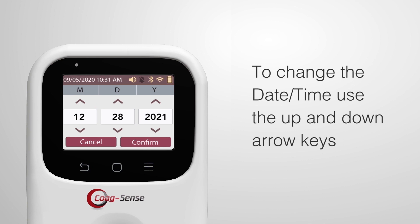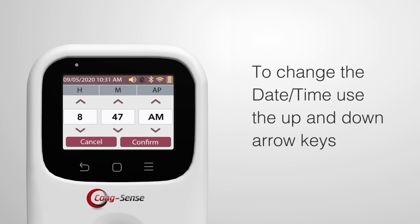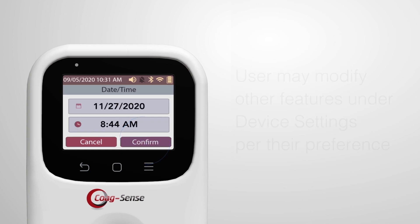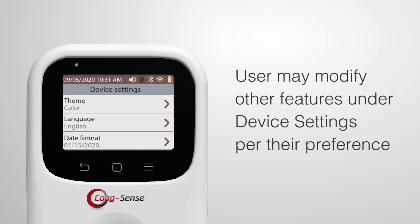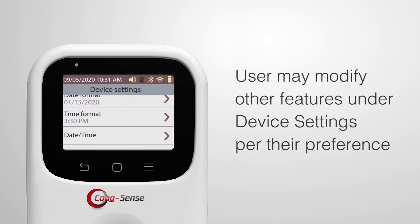To change the date or time, use the up and down arrow keys to get the appropriate month, day, year, or hour, minutes, AM, or PM, then confirm. Users may modify other features under device settings per their preference.